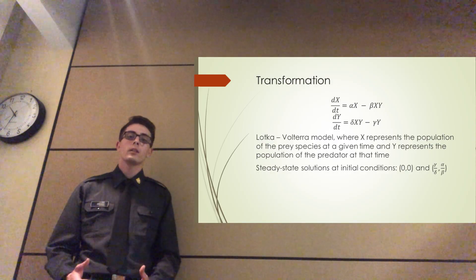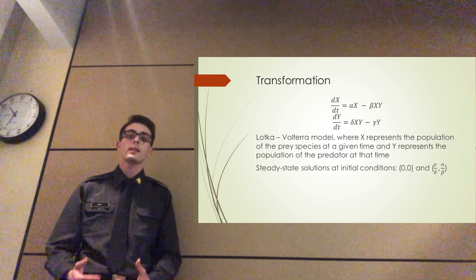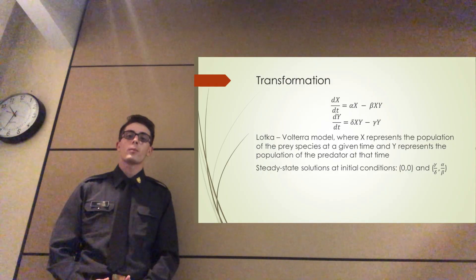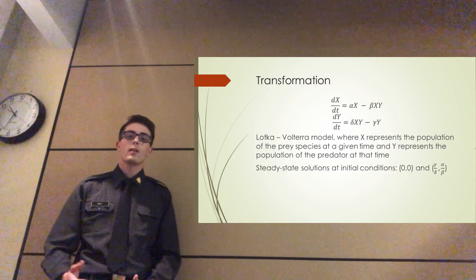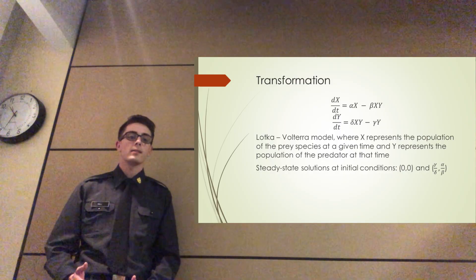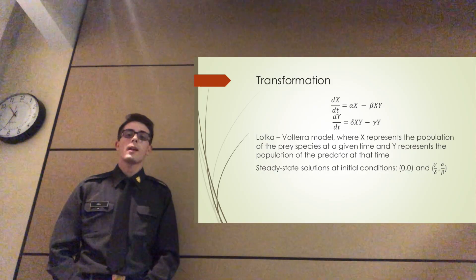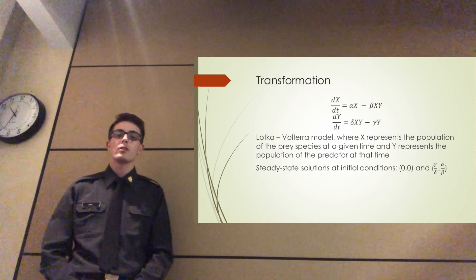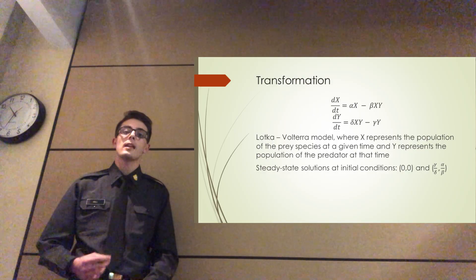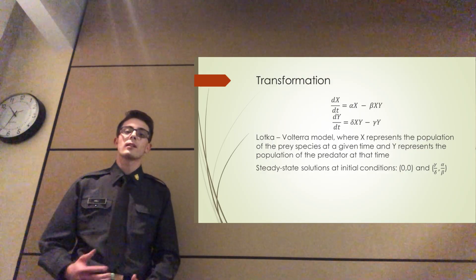Now this model has two steady state conditions, which can be found by setting each equation to zero and solving for critical values. This is zero-zero, which represents an extinction event where the populations of either species is zero. And second is gamma over delta for the population of the prey species, and alpha over beta for the population of the predator species, which creates the unique time where we're going to see a steady value for predator and prey, rather than a cyclical up and down.